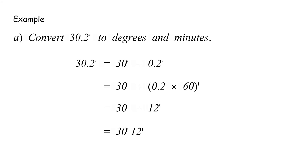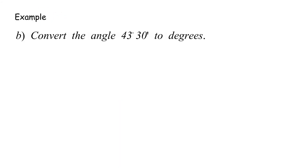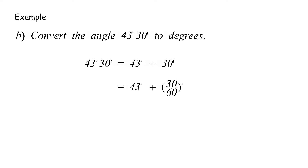Example B: Convert the angle 43° 30' to degrees. 43° 30' equals 43° plus 30 minutes, equals 43° plus 30 over 60 degrees, equals 43° plus 0.5°, equals 43.5°.